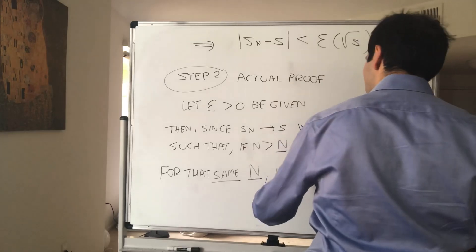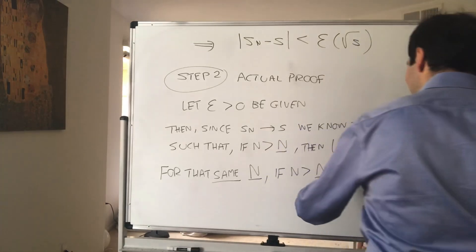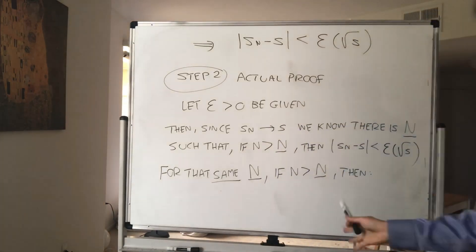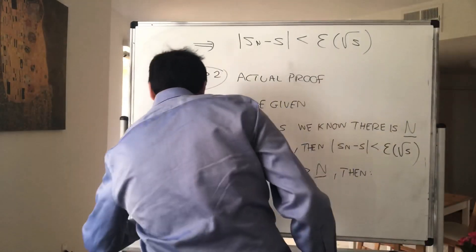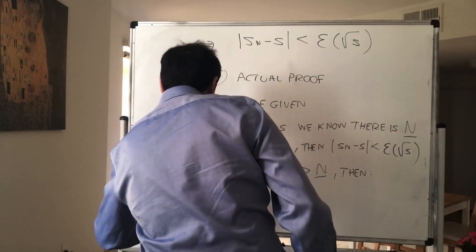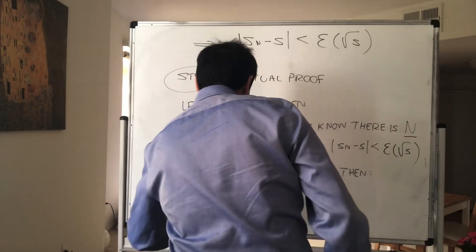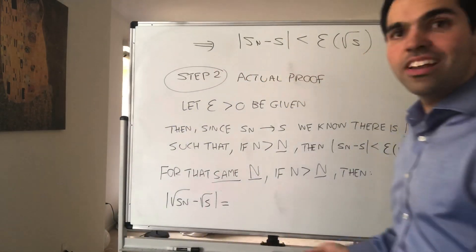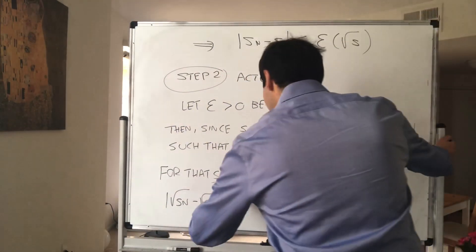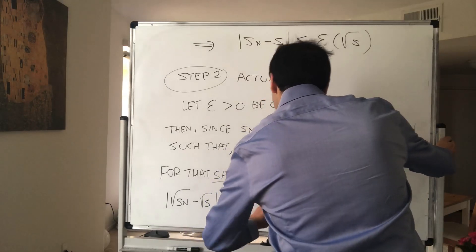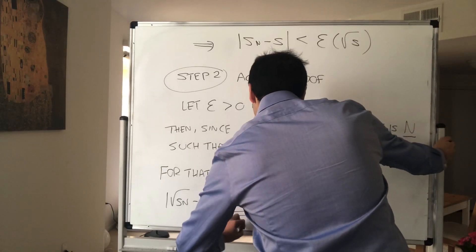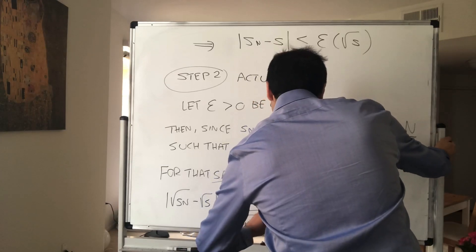if you go above that threshold, then what do we have? Then the stuff that we want to be small, square root of Sn minus square root of s, by the same calculation as before, this becomes Sn minus s over square root of Sn plus square root of s.